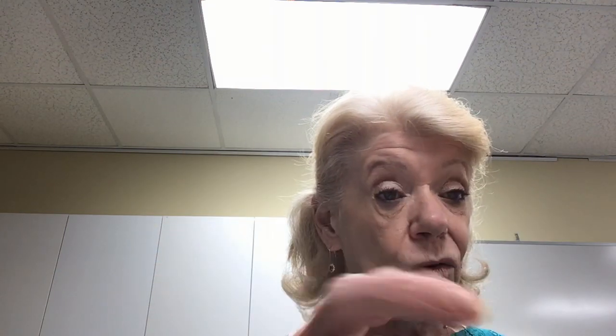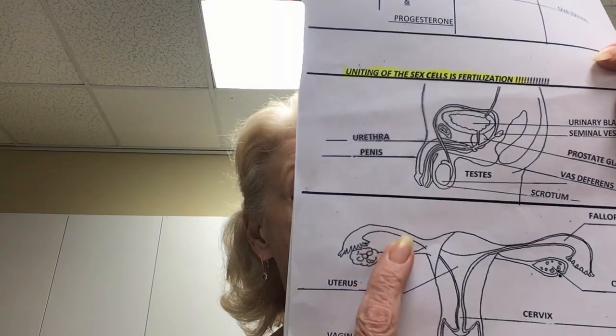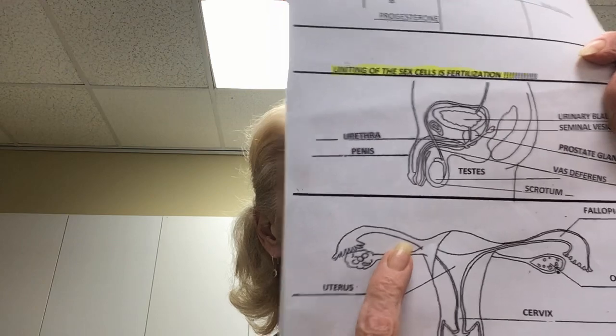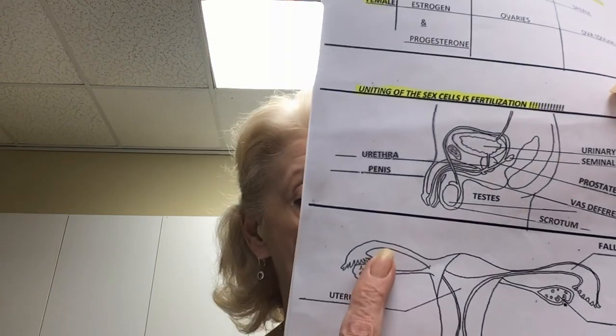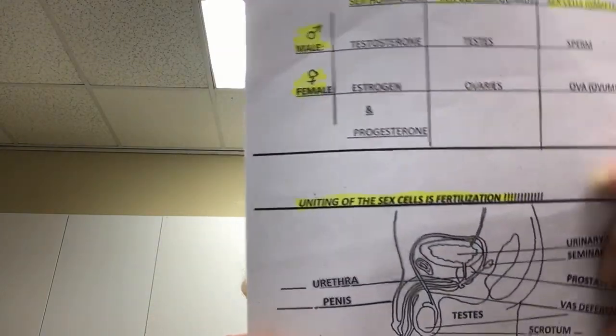As the egg travels down the fallopian tube, each side of it is lined with little hairs called cilia — that's what moves the egg along. The fimbriae are the finger-like projections at the end of each fallopian tube that gently brush up against the ovary to capture the egg once it's released. The egg can take two to three days to travel through the fallopian tube. If it is not fertilized by a sperm, it will disintegrate and be flushed out with the next menstrual cycle.